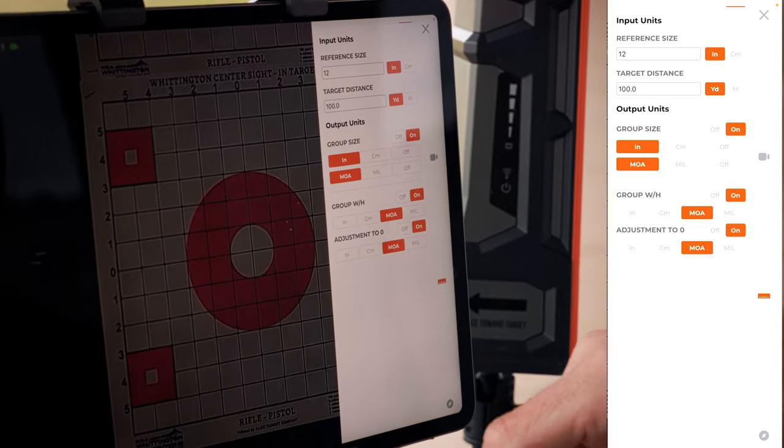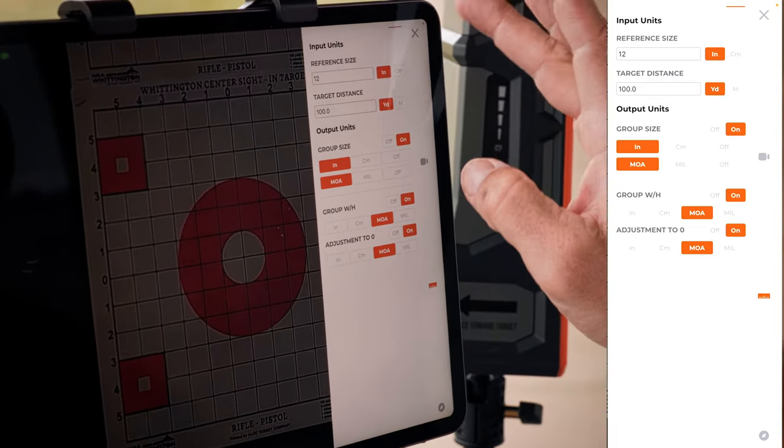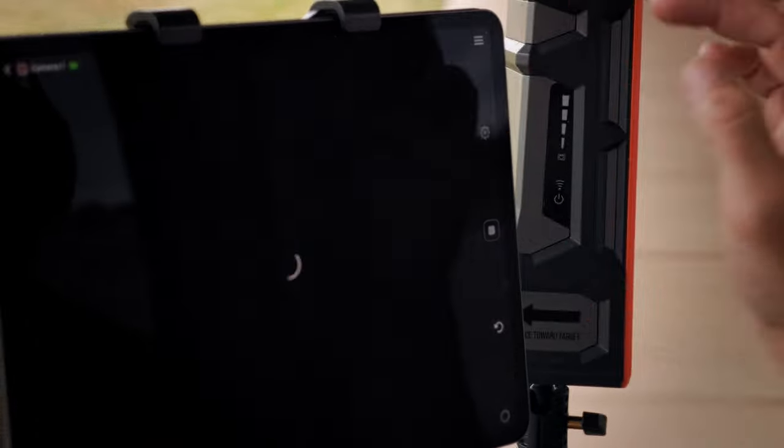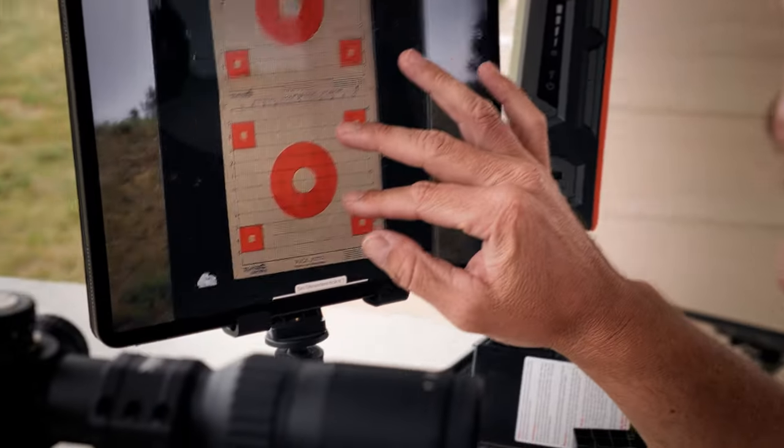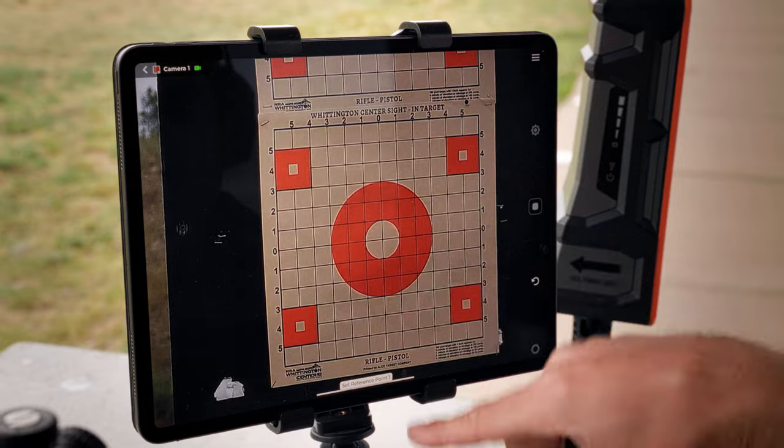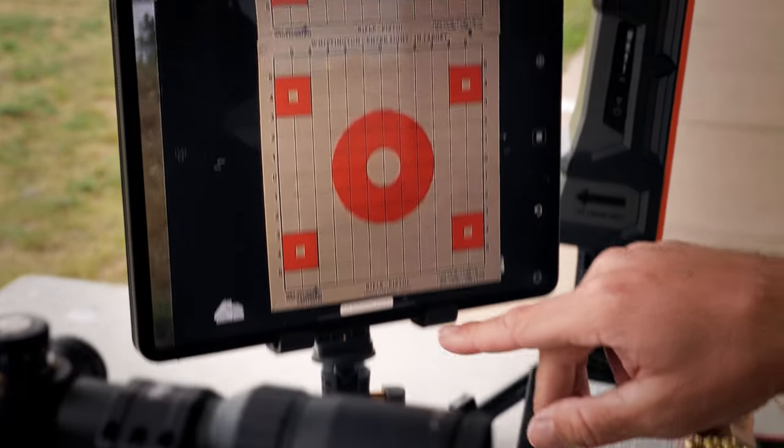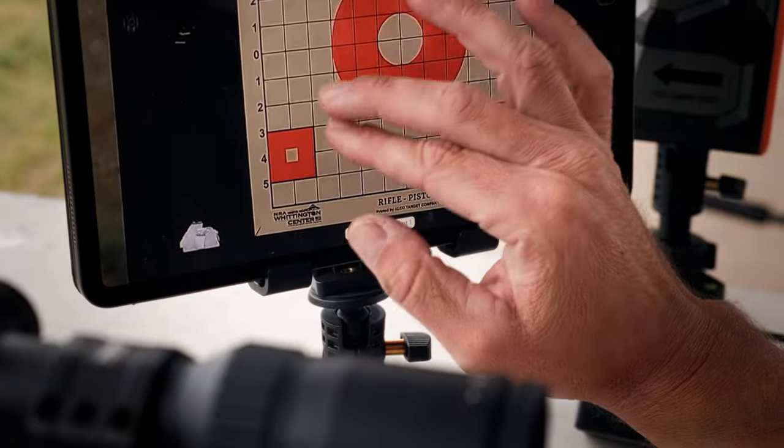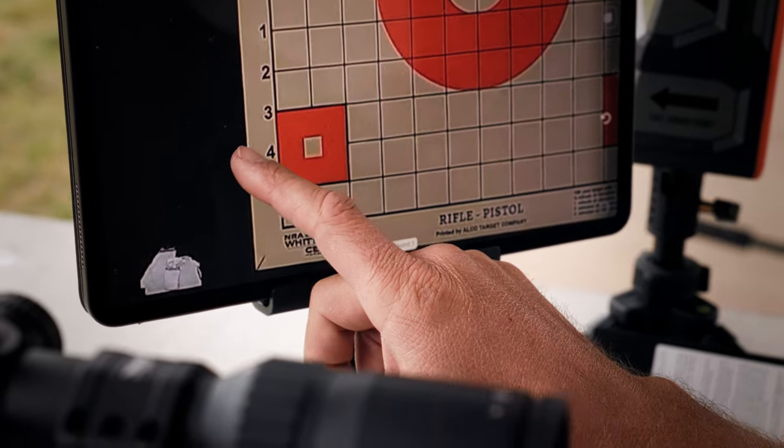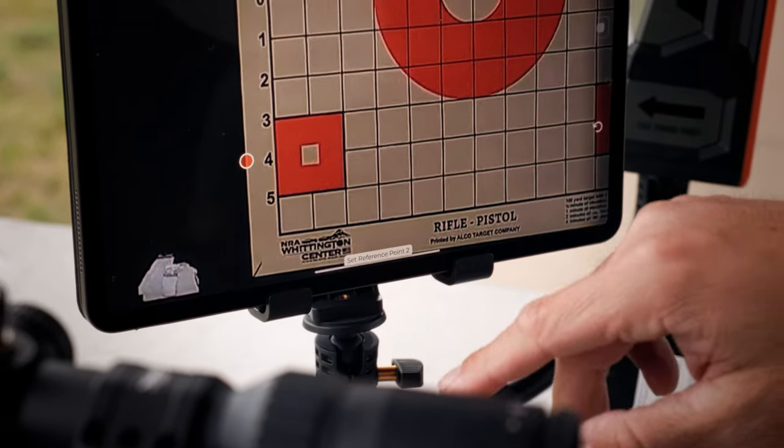When you start throwing rounds downrange, it gives you a real-time feed. We're going to X out of that. Now what's great about this, you can zoom in. In the bottom middle of the screen, it's going to ask you for a reference point one. This is calibrating the calculator.